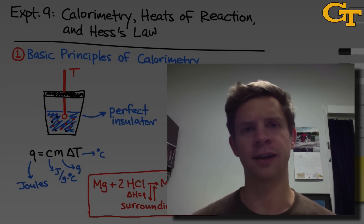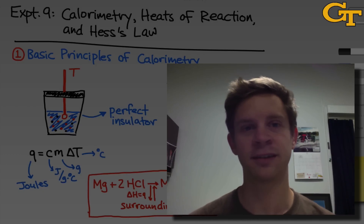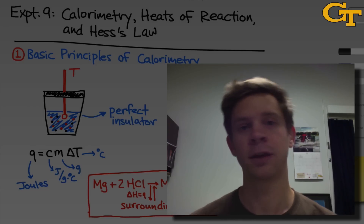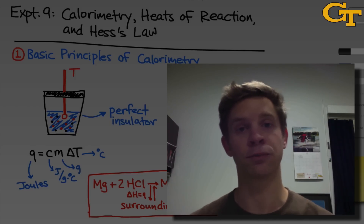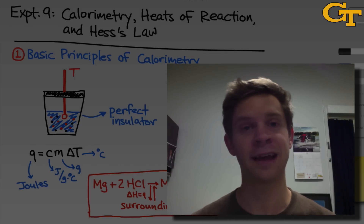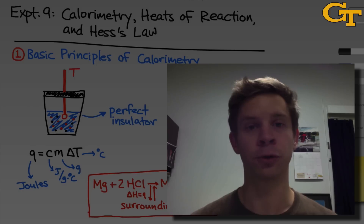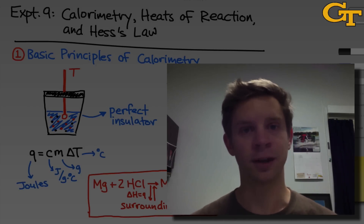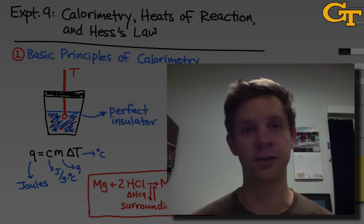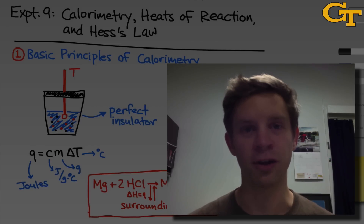At its core, Hess's Law really just says that enthalpy is a state function. But the simple statement that enthalpy is a state function has very profound implications. Specifically, it means that as long as we can identify a path in chemical space to convert reactants to products, and if we know all of the enthalpies along that path, we can simply add them up to produce the enthalpy for the overall conversion. So reactions that are very difficult to study can be broken down into simpler reactions that are easier to study, and then the enthalpies of those simpler reactions can be added to produce the unknown enthalpy.